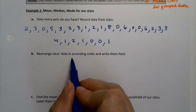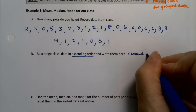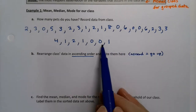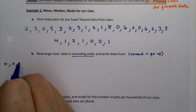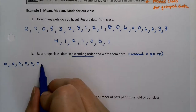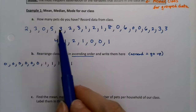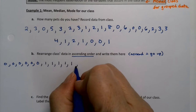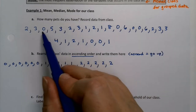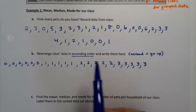We're going to rearrange the class's data in ascending order — ascending meaning going up. Starting at the lowest value, zero, we have six zeros. Then we count the ones — there are five. Then the twos — also five. Then the threes — five as well. This is a very evenly distributed class.